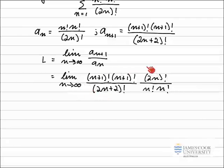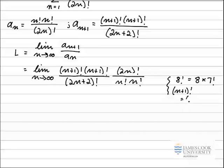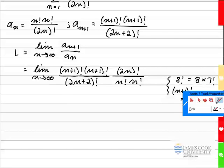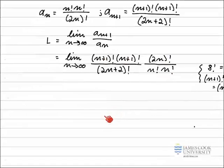To take the limit as n approaches infinity of this large fraction we need to simplify. We're going to look at common terms in n factorial and n plus 1 factorial, using the fact that factorials can be reduced. For example, 8 factorial is the same as 8 multiplied by 7 factorial, and then that 7 factorial may cancel with something on the bottom. We do exactly the same with n plus 1 factorial: n plus 1 factorial equals n plus 1 multiplied by n factorial.